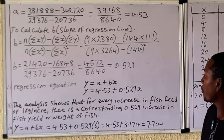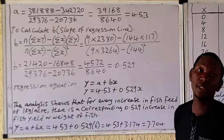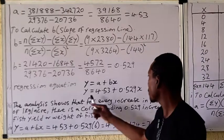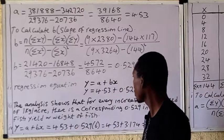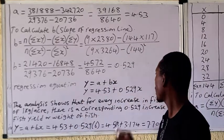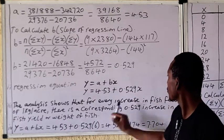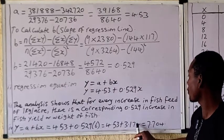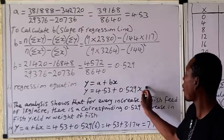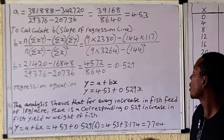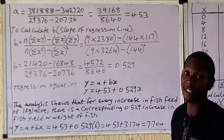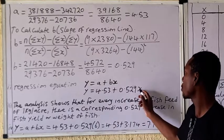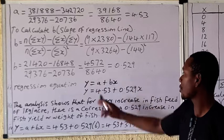The last part asks: if you apply six kg of fish feed per acre of the pond, what will be the yield? Your formula is already here — the equation you formed. Just put x equals six: 0.529 multiplied by 6 gives 3.174, then add 4.53 to get the predicted yield. For any value of x they ask you to find, put that value of x into the equation, multiply by b, add a, and you get the value of y.